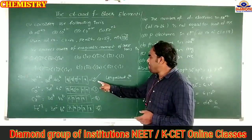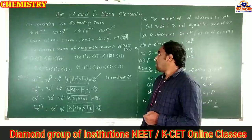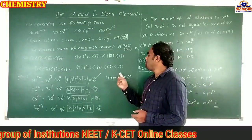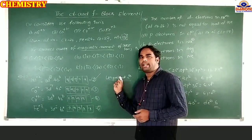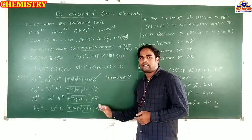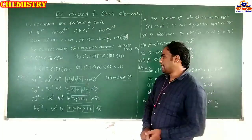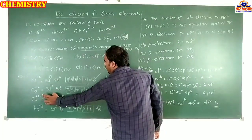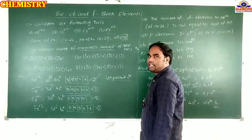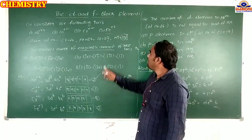Going from Ni²⁺ to Fe³⁺, the number of unpaired electrons increases: 2, 3, 4, 5 respectively. Since magnetic moment depends on unpaired electrons, as unpaired electrons increase, magnetic moment also increases. Therefore Fe³⁺ has the maximum magnetic moment. The correct order is Fe³⁺ > Cr²⁺ > Co²⁺ > Ni²⁺, which is option A.